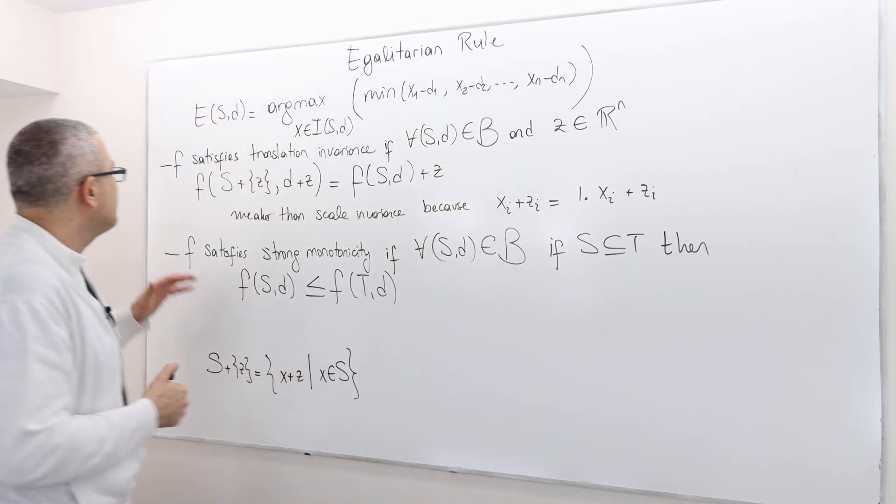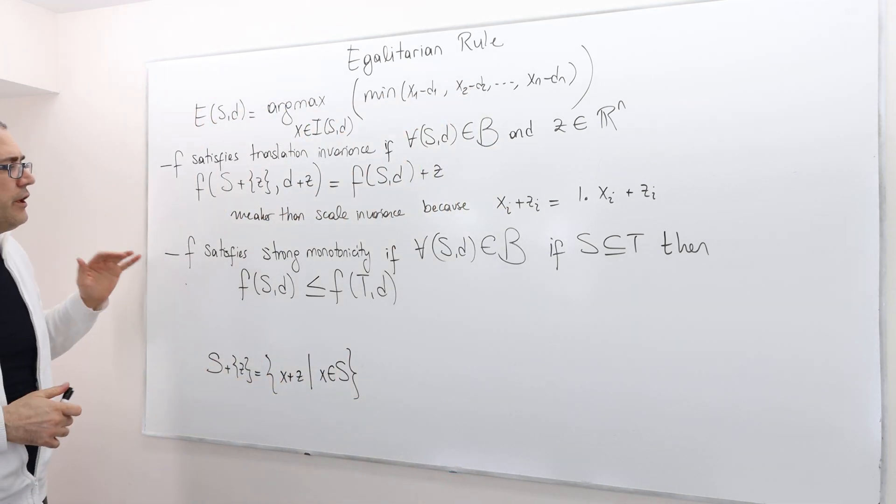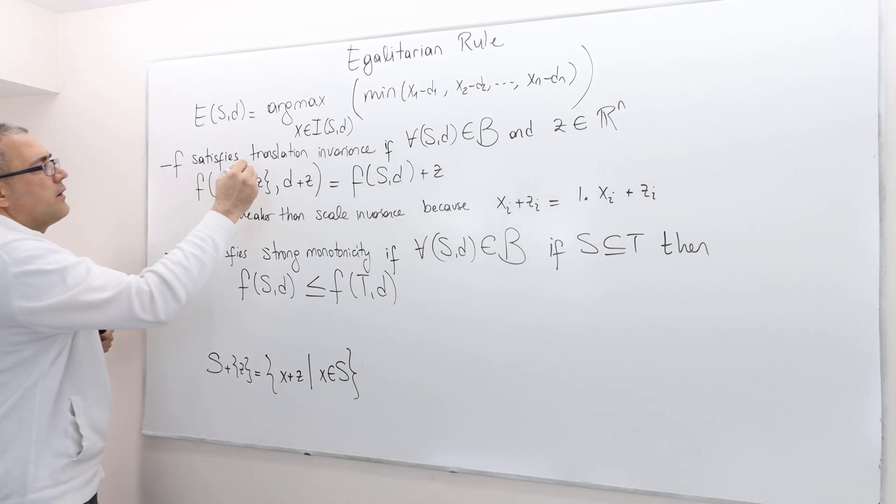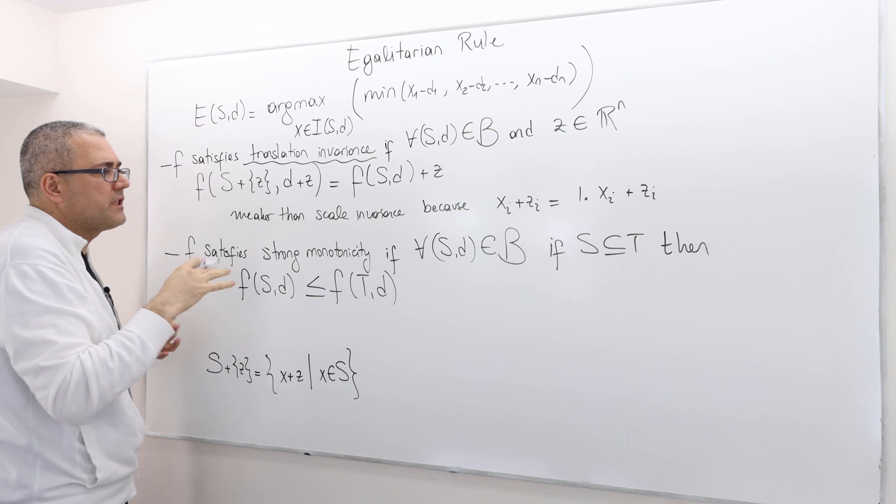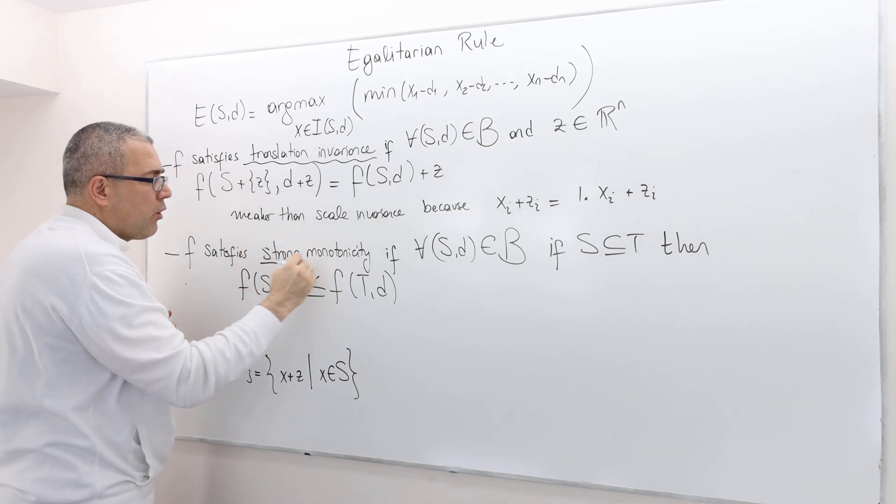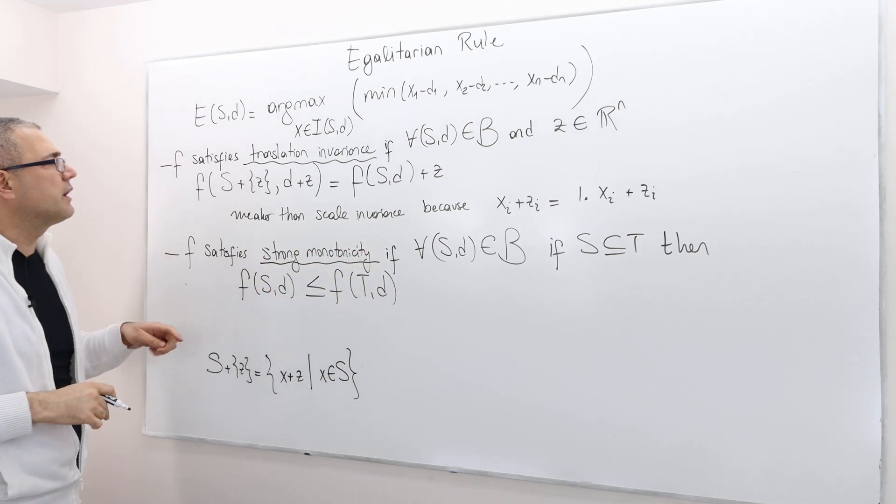Here is the definition of these two axioms: translation invariance, which is related to scale invariance, and strong monotonicity, a very strong assumption.